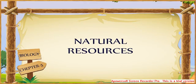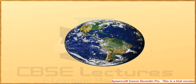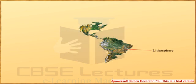Natural Resources: Everything that surrounds us collectively forms our environment. Our environment constitutes the biosphere, which we can divide into three parts. The first one is Lithosphere. Lithosphere is the outer solid crust of the earth, which we call land. It is the upper weathered part that forms the soil.